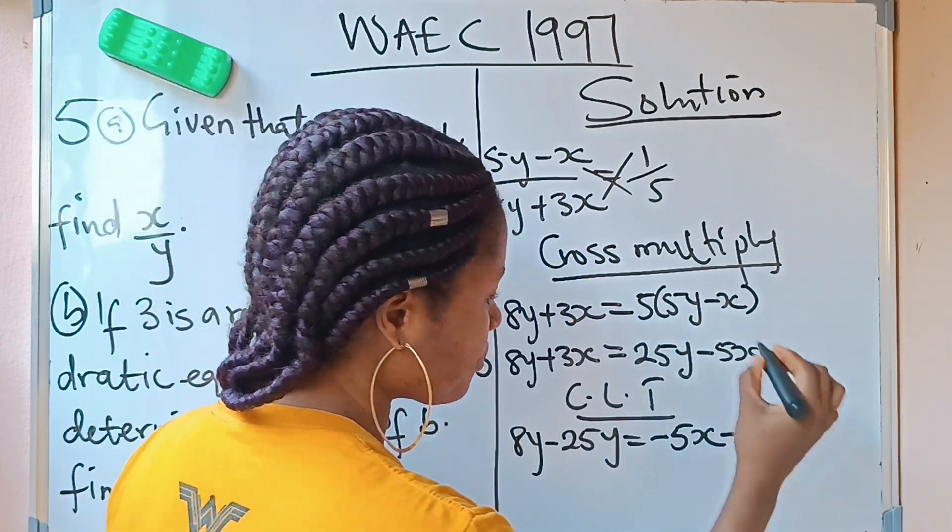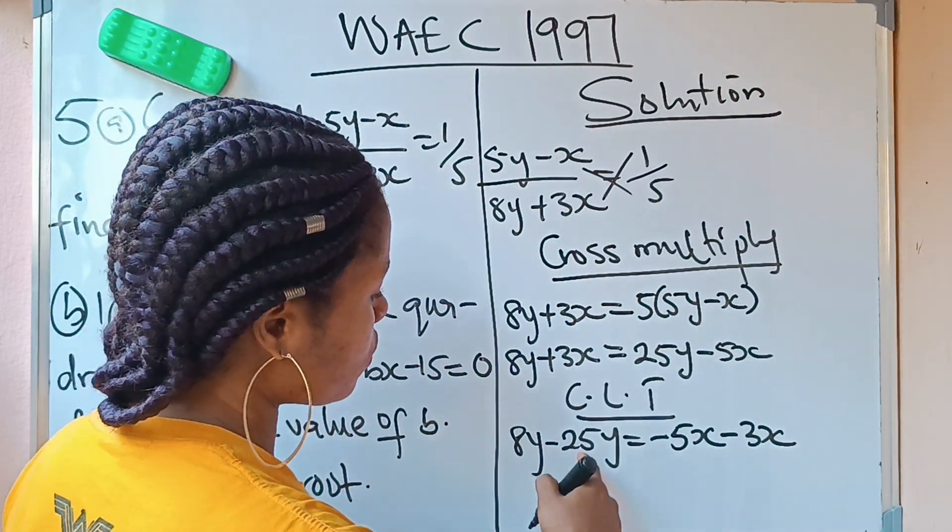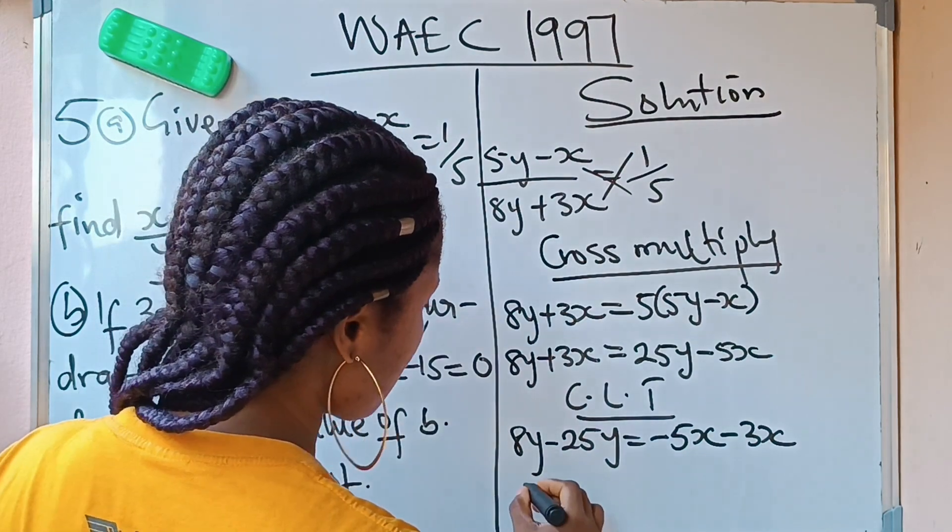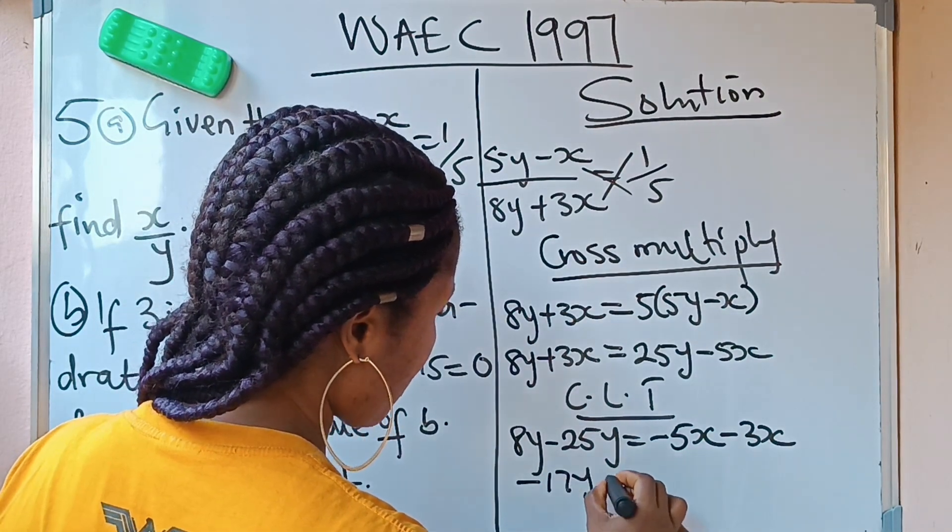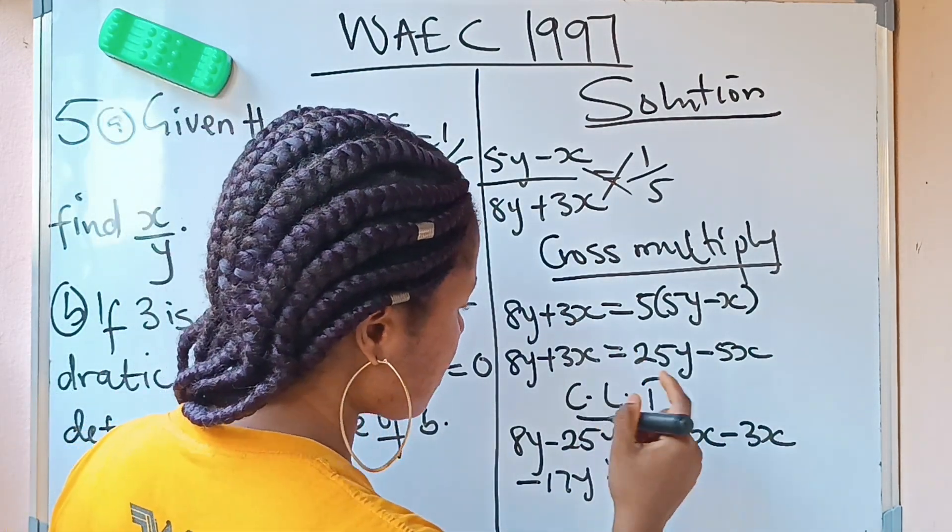So 8y minus 25y is going to give us minus 17y. So it's going to be -17y equals -5x minus 3x, which is going to give us -8x.